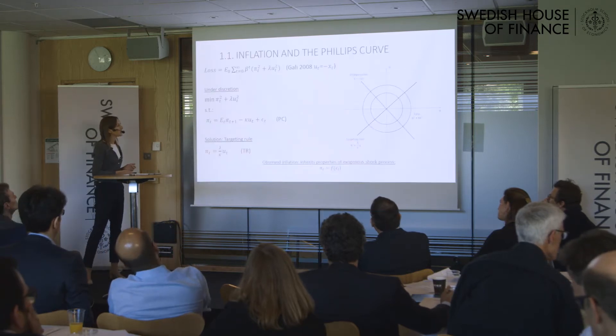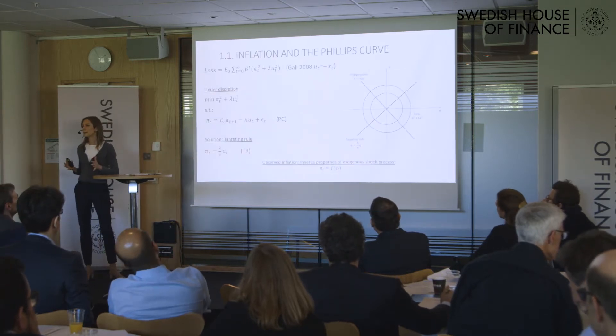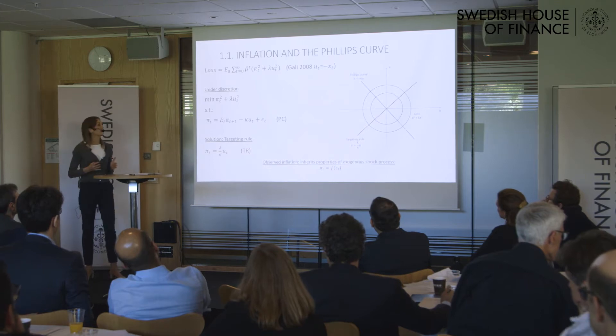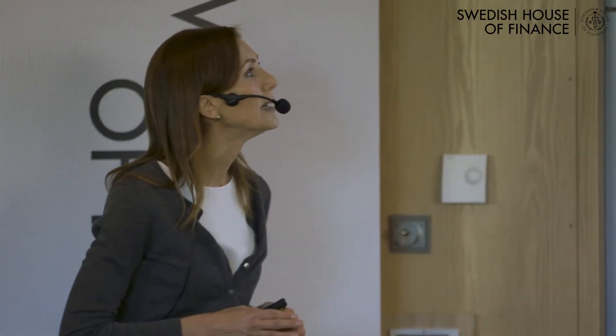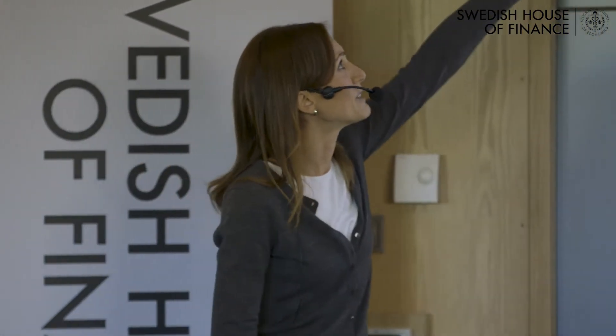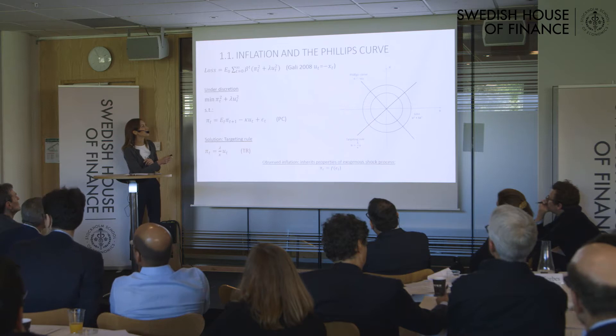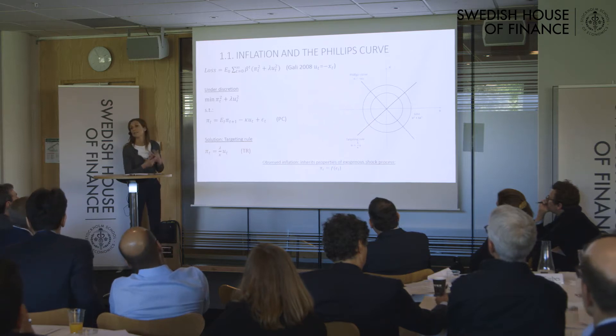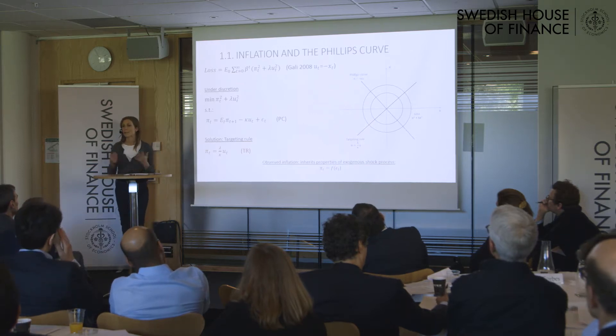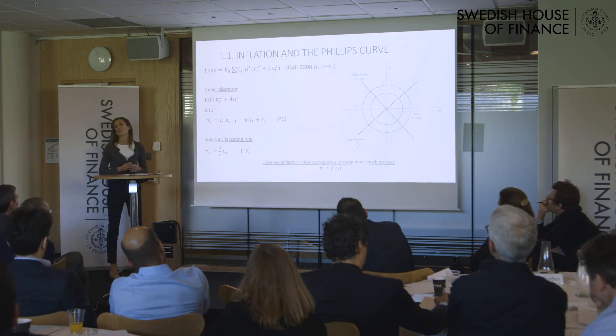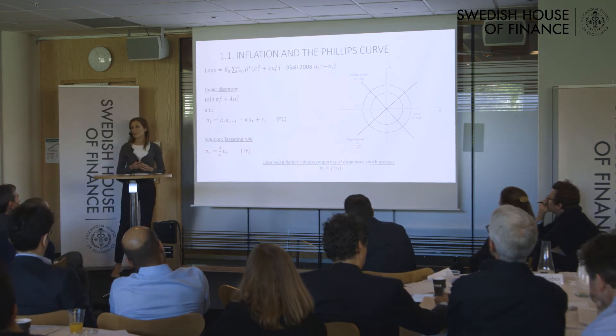To make my argument, I will use the exact same model that Harald uses — the textbook New Keynesian model in Michael Woodford or Jordi Galí — and as a measure of slack I will also use the unemployment rate. This is the central banker's loss function: π_t here is the deviation of inflation from target, and u_t is the deviation of unemployment from the natural rate. Let me focus on the solution under discretion.